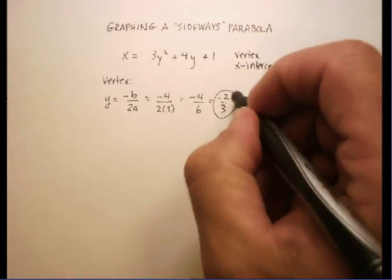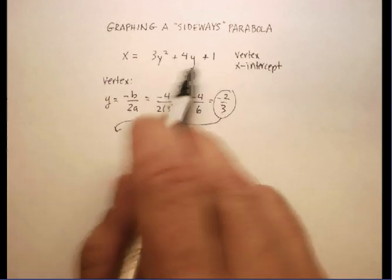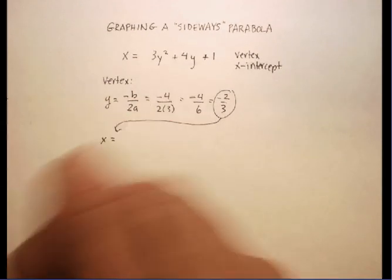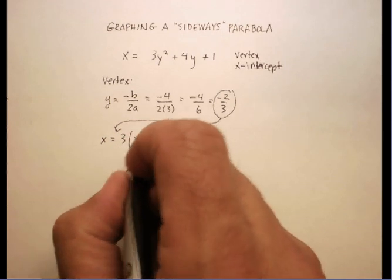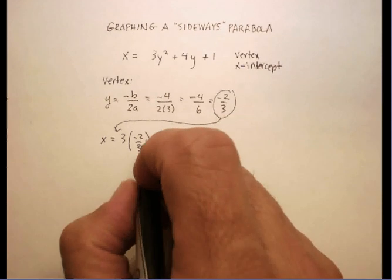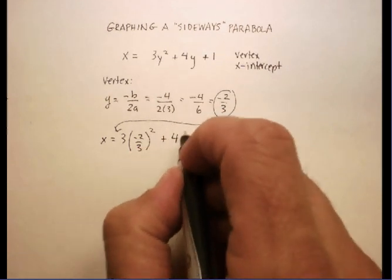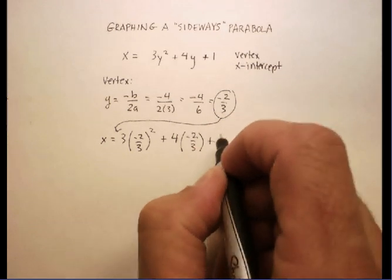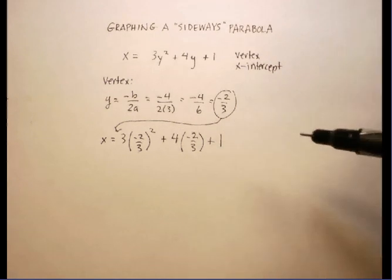I'm going to take that value and I'm going to plug it back into the equation. That's called like composing functions, but we're just going to go ahead and do that. Let me replace the y. Whenever I see y, I'm going to put in a negative 2 thirds, plus 4 times negative 2 thirds, plus 1. So I've replaced all the y's now with a negative 2 thirds.